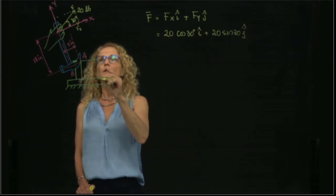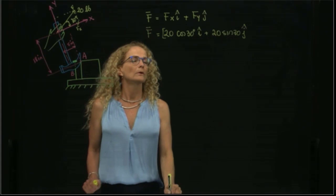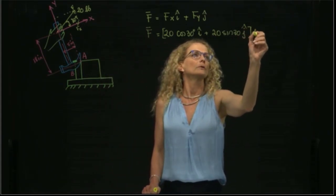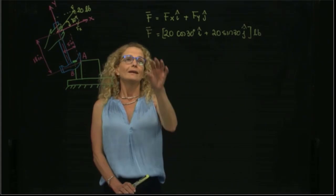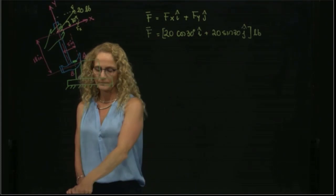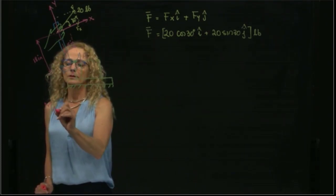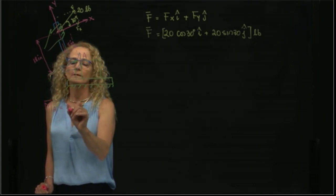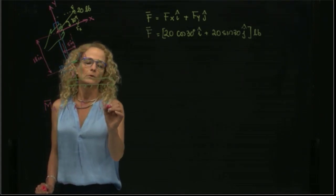So this is my force in pounds as a vector in terms of its components. So let's see how these components produce moment with respect to point A. As you recall, moment, the definition of moment as a vector is the distance times the force vector approach, right?